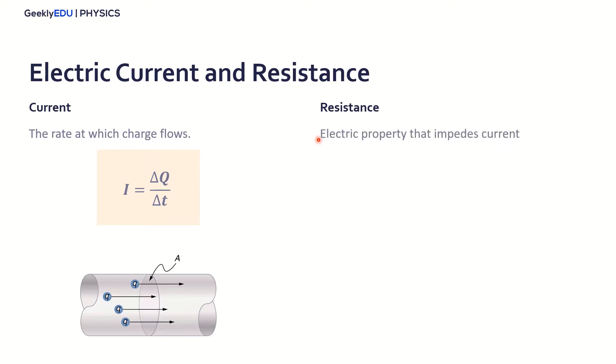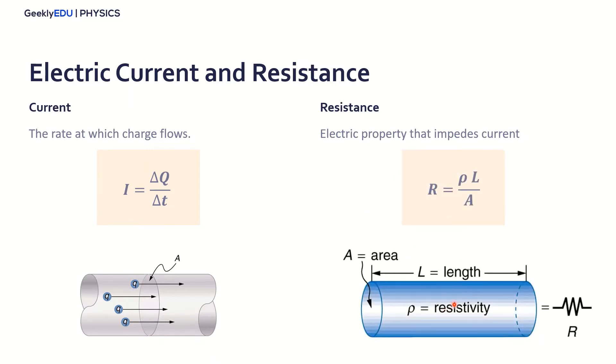Now for resistance, it's an electric property that impedes the current, so it's a resistance to the current flow, for the charged electric particles to flow. So we can calculate for a wire, for example, this cylindrical wire, using this formula. We have the resistivity of the material ρ, the length of the wire L, and the area A, this cross-sectional area here of the wire. So we can calculate the resistance using this formula here, R = ρL/A. It's proportional to the length and area.